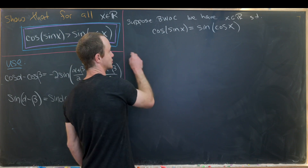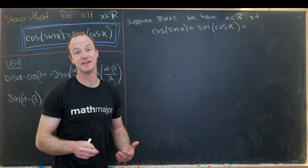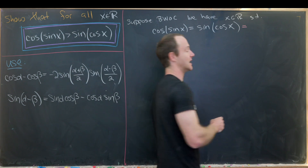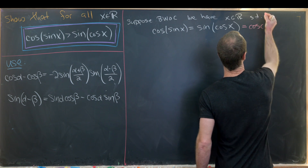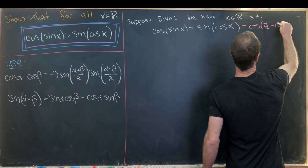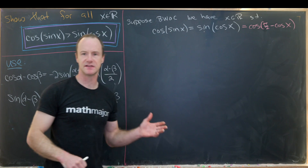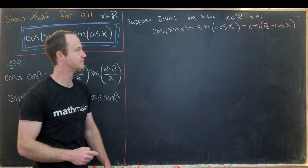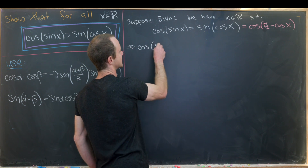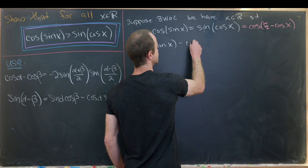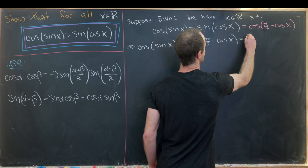From here, I'll rewrite the right-hand side using the phase shift formula that relates cosine and sine. So sine of cosine of x is equal to cosine of π/2 minus cosine of x. In general, sine of θ is the same thing as cosine of π/2 minus θ. That means we have the equation: cosine of sine of x minus cosine of π/2 minus cosine of x equals 0.